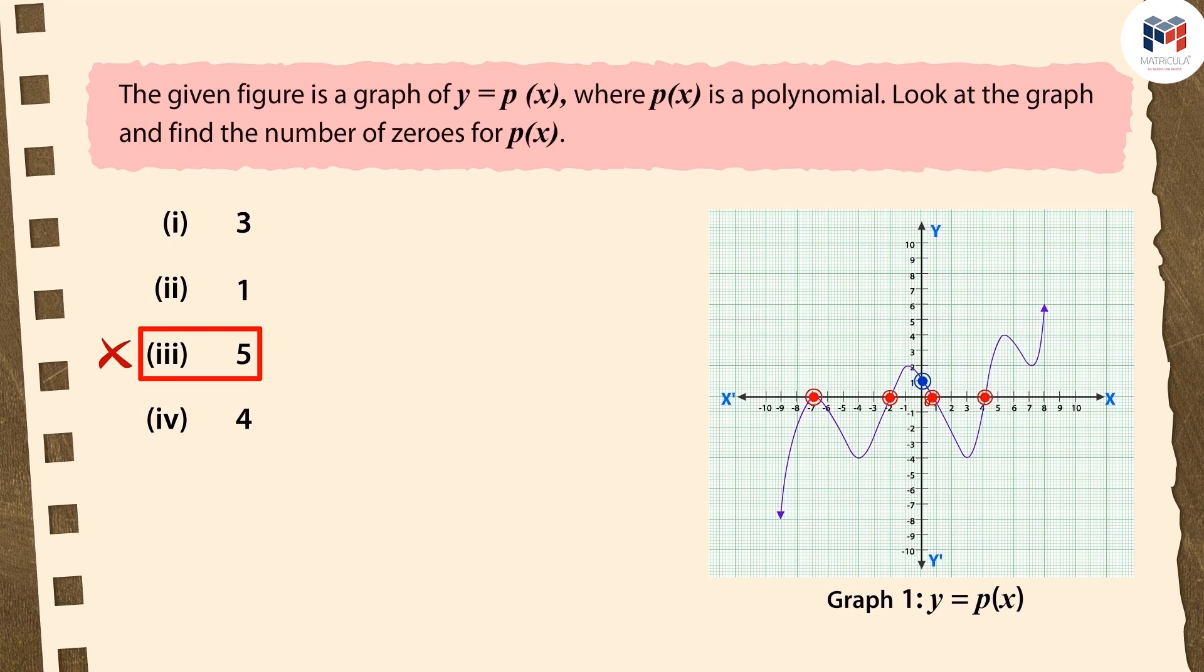Recall that the number of zeros of a polynomial is equal to the number of points intersecting the x-axis of the graph of that polynomial.